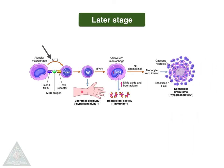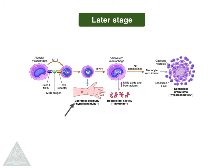In the later stage, we can see granuloma formation through interleukin-12 and interferon-gamma, which activate macrophages and monocyte recruitment, causing caseous necrosis and granuloma. With the help of T helper cell activation, the tuberculin test will be positive — one of the investigations for tuberculosis infection — and these activated macrophages can kill the bacteria through free radicals.